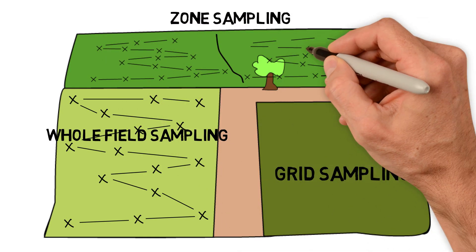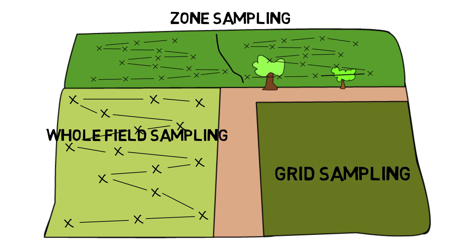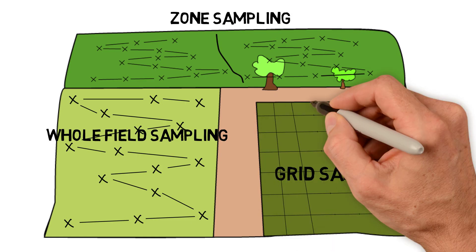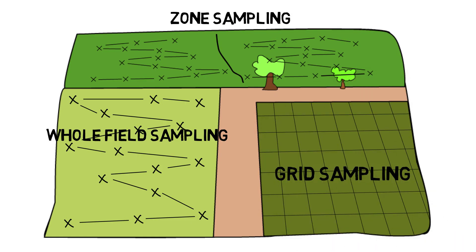The last method is grid sampling, which is the most precise, but it also requires the most amount of time and can cost the most amount of money for soil analysis. Grid sampling is especially useful if you want to make a map or do precision agriculture. To do grid sampling, you overlay a grid on your field.